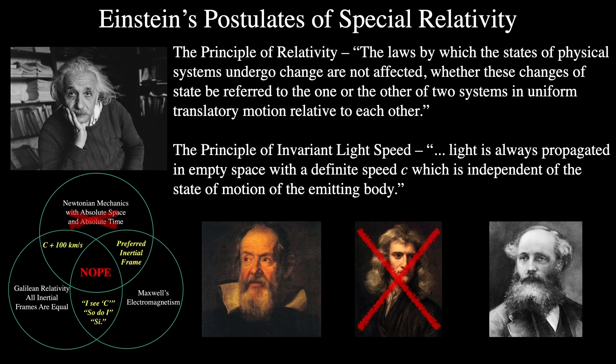These two effects were always seen as two different phenomena and treated differently with different equations and different names. But Einstein came along and said that the actual observable effect — the generation of a current — does not depend on which object, either the magnet or the conductor, is in motion, but only on their relative motion. In the case of the moving magnet and the stationary conductor, the movement of the magnet creates an electric field around it, which in turn generates a current in the conductor.